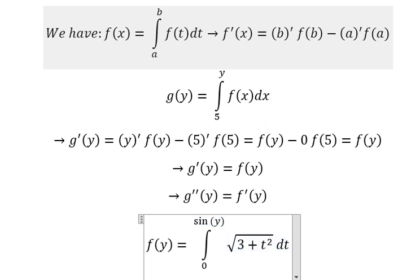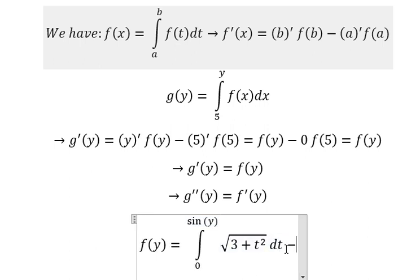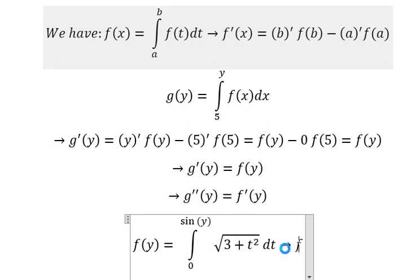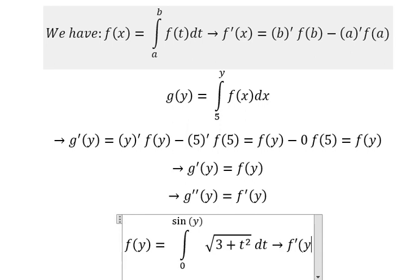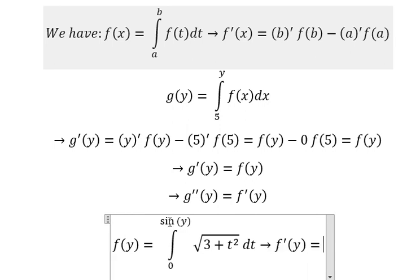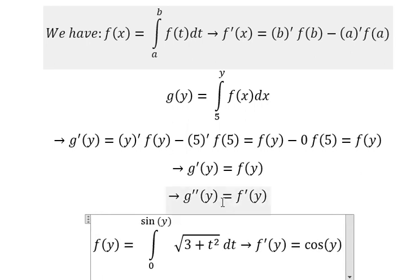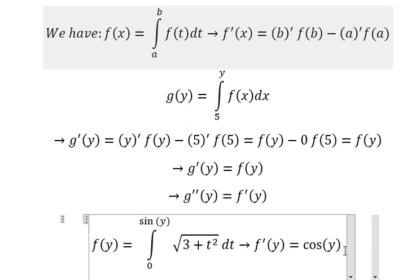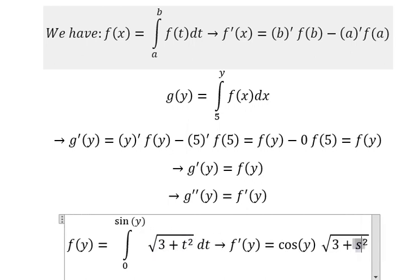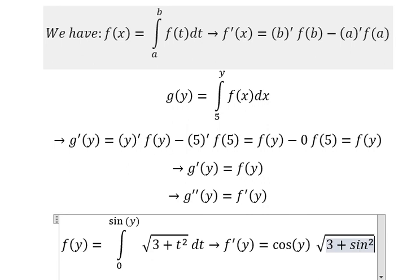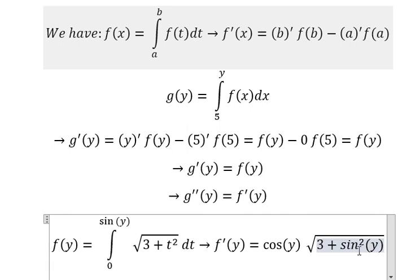Now if we do the first derivative, it should look like this. We take the first derivative of sine(y) and we get cosine(y), and the value of sine(y) will change to t. This part is a constant, so we get zero.